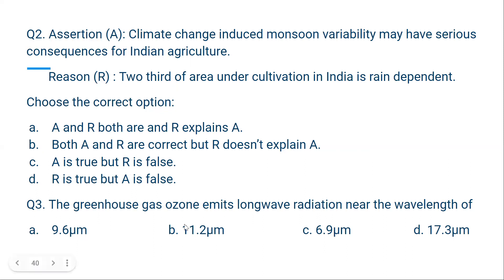The greenhouse gas ozone emits long wave radiation near the wavelength of 9.6 micrometers. This is a factual question — you have to memorize it. Ozone acts as a greenhouse gas and also as a long wave radiation emitter. When the ozone molecule is warm, it emits in the 9.6 micrometer range. The correct option is A.